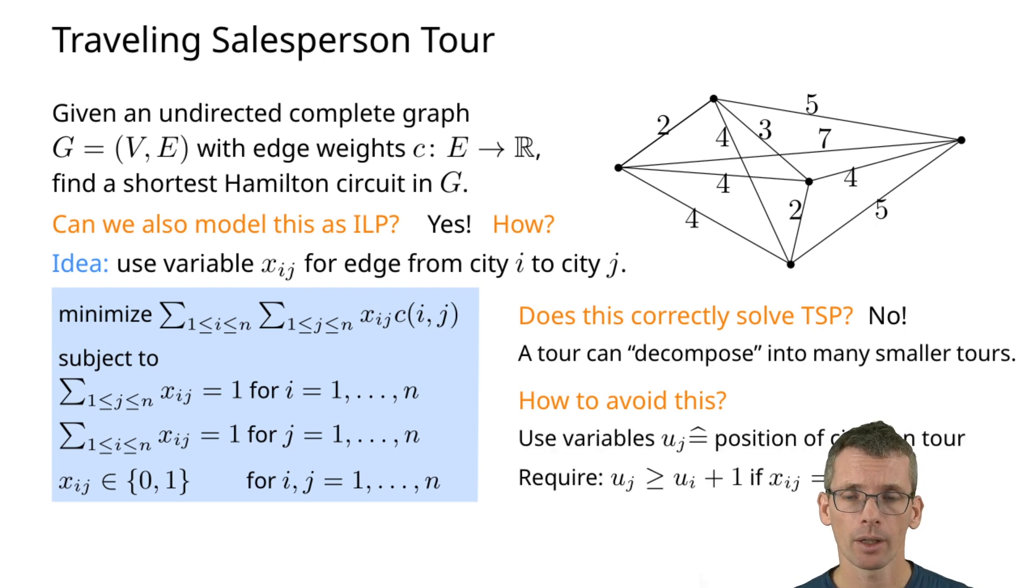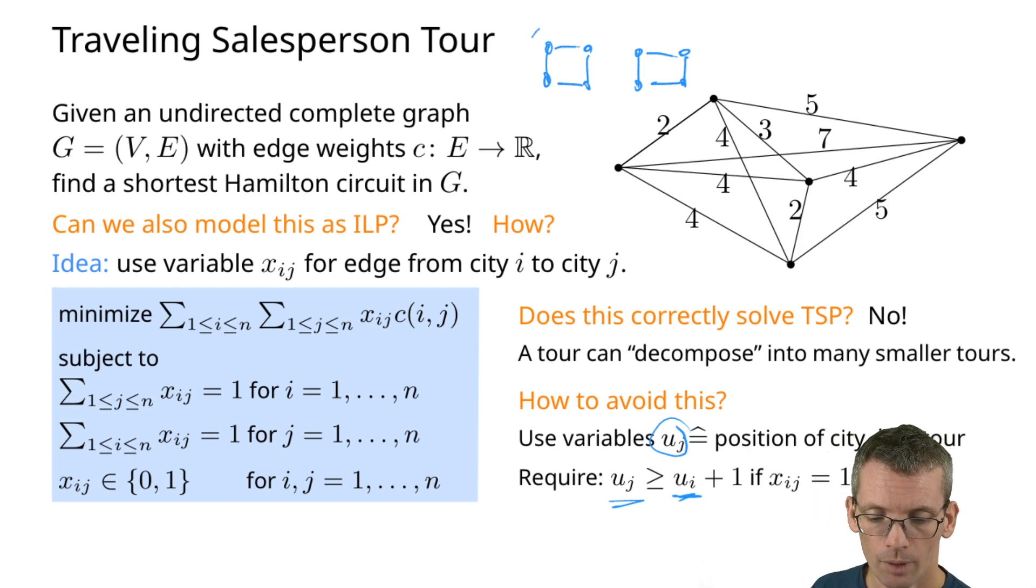The first one is the following. We essentially have variables which tell us the position of the city j on the tour. So we're going to number them one to n, and then what we're going to ask for is that if coming from u_i, the next city should have a larger value here. So in the order it should come later. If we would have two cycles and I would try to number them one, two, three, four, then from four I would be going back to one, and I would only allow myself to go back to one from n. So this would not be possible if we can achieve this condition.